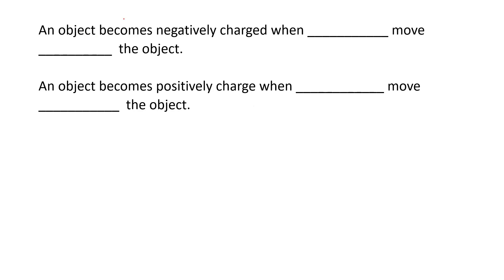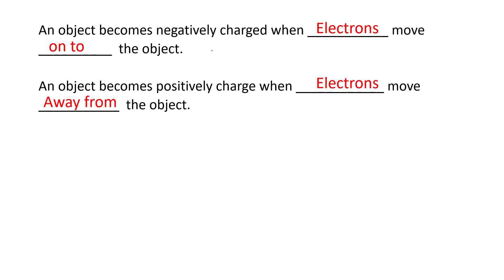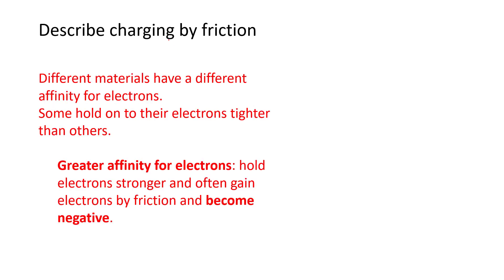An object becomes negatively charged when electrons move onto the object. An object becomes positively charged when electrons move away from the object. It's always electrons moving to charge an object.